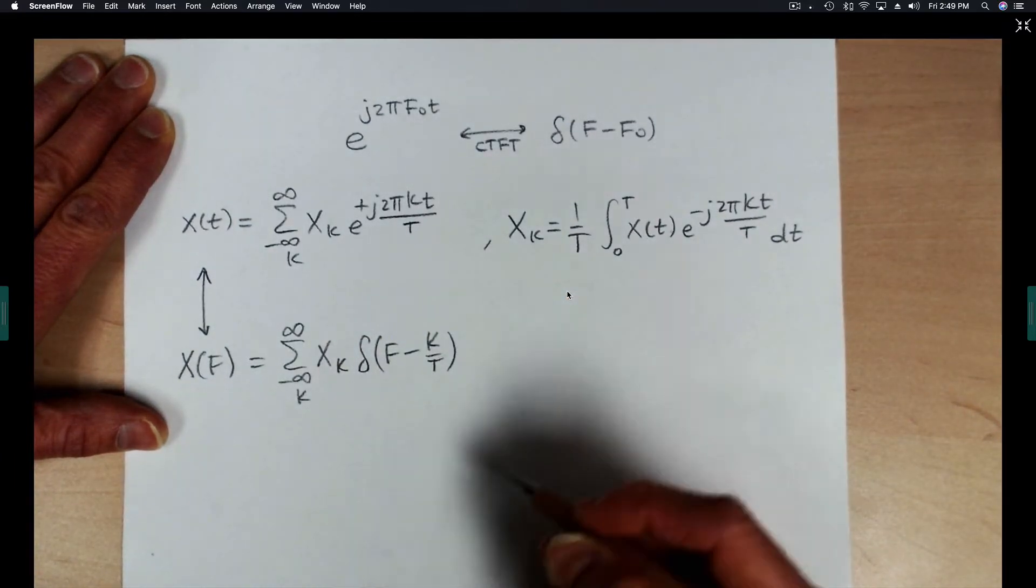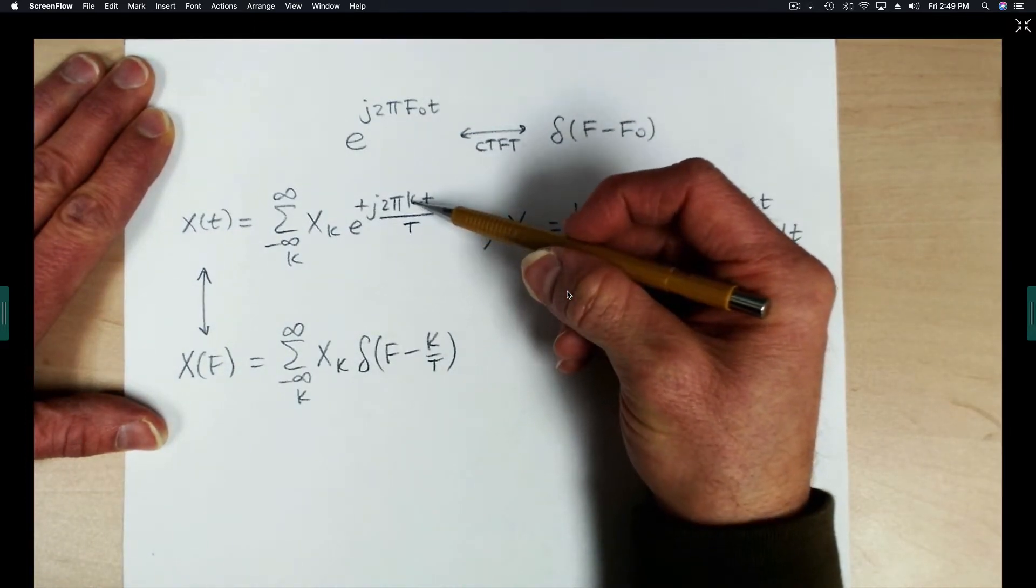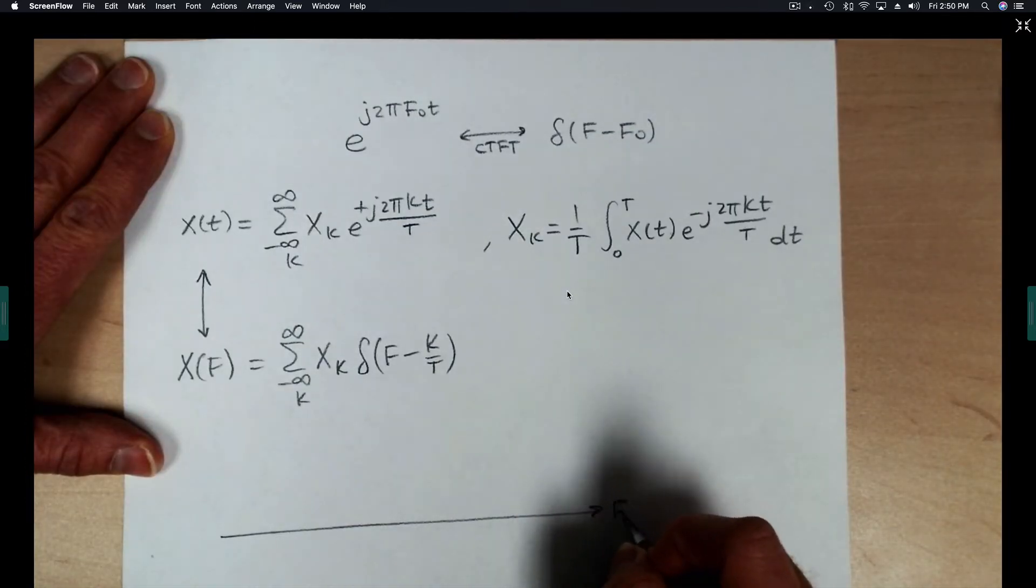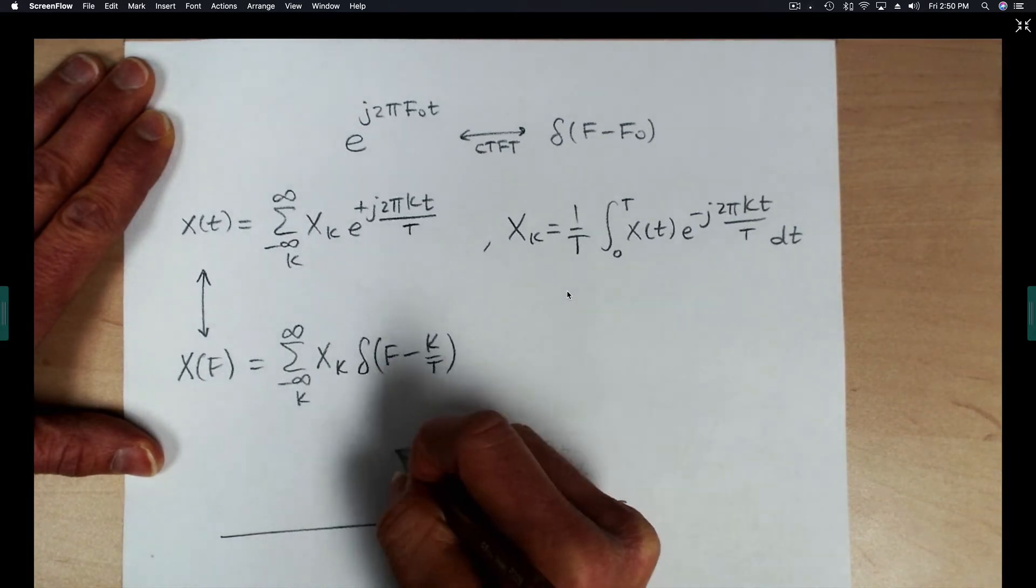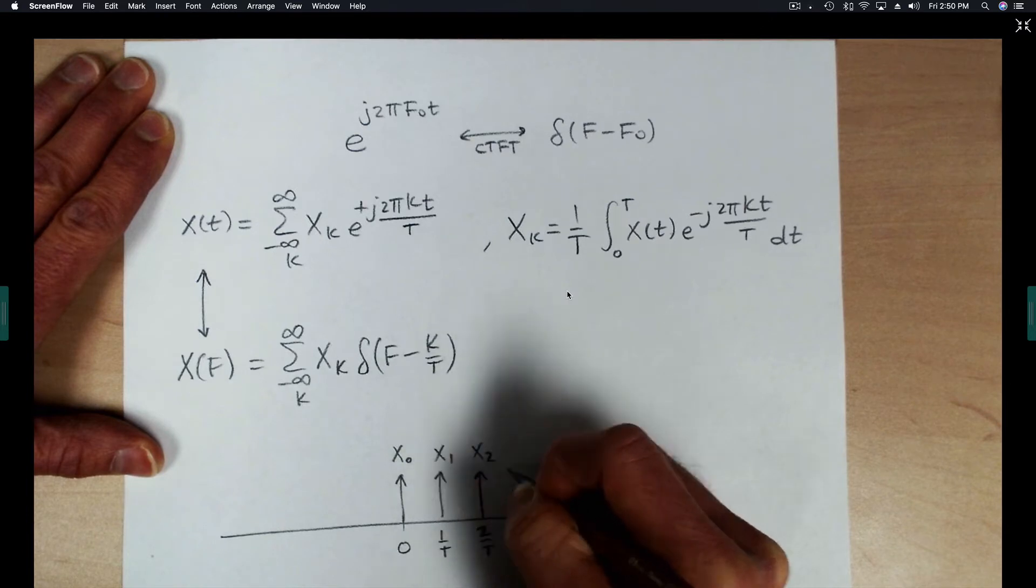All we have to do is recognize that the frequency of this complex exponential is k over t. If we were to make a graph of this Fourier transform, it would look something like this.